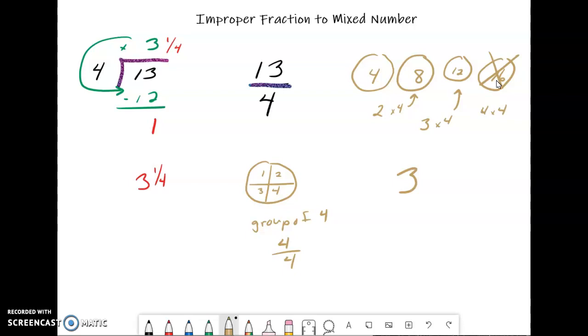So we know we started with 13 pieces, and we used up 12 pieces to make up our 3 wholes. And then we have 1 piece left over. So that's 1 out of 4.